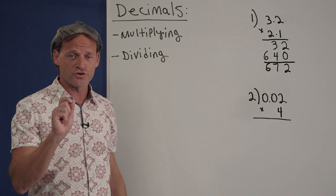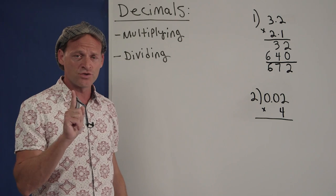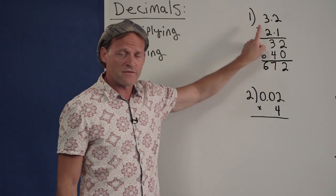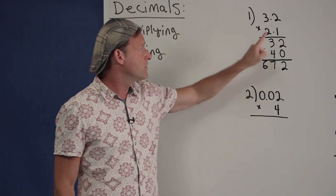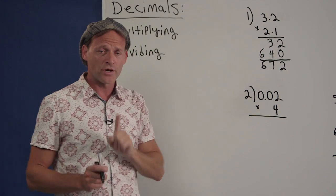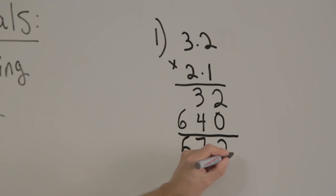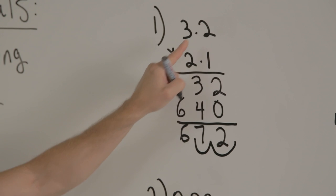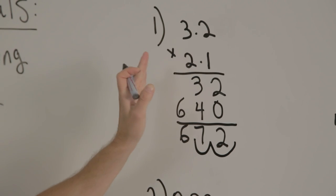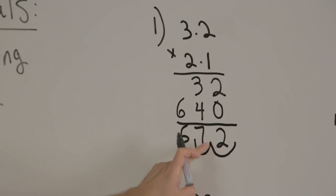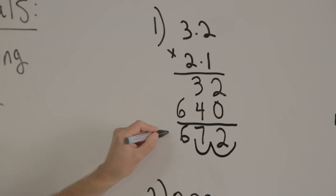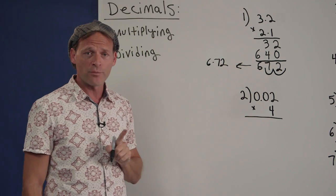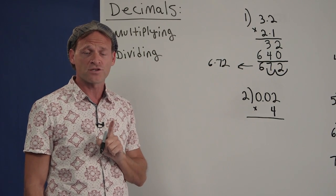Your answer is not 672 — here's what you do when multiplying with decimals. Count how many digits are to the right of both decimals and add them up. There are two digits to the right of both decimals combined. Now take the invisible decimal, which is at the end of 672, and move it to the left that many spaces. So our answer is 6.72. If you remember that rule, you'll know how to multiply with decimals forever.